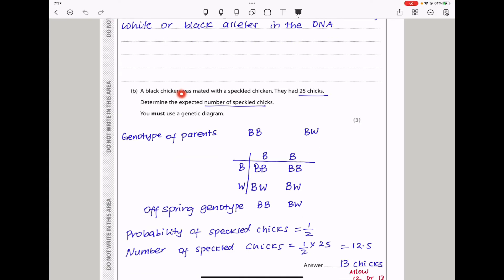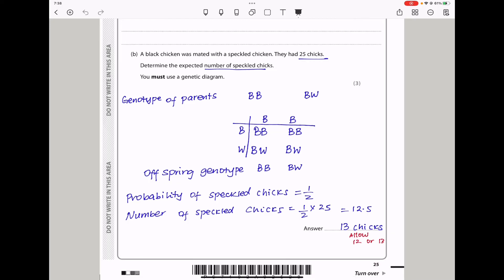The next question says, a black chicken was mated with a speckled chicken. They had 25 chicks. Determine the expected number of speckled chicks. You must use a genetic diagram. I took this to be the genotype for the black, and this is the genotype for the speckled. So the possible gametes are going to be BB from that one here, and BW from that one here. My genetic diagram gives me offsprings that are capital B, capital B for black, as well as capital B, capital W, which is for speckled. So the probability of speckled chicks is going to be a half, and the number of speckled chicks is going to be 1 over 2 times 25, which gives me 12.5, and I can round that off to be 13 chicks.